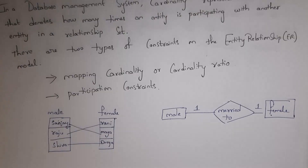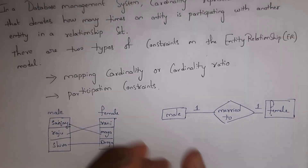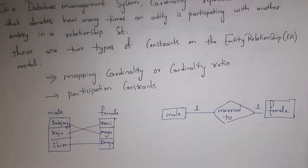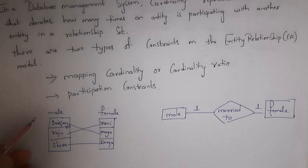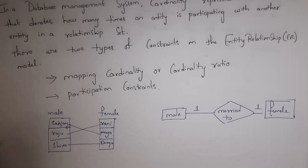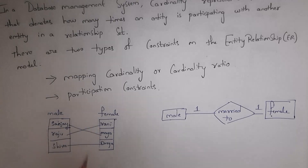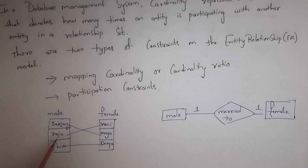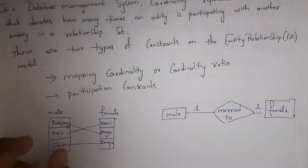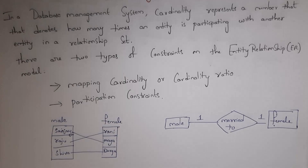For example, consider there are two entity sets — one is a male entity set and the next one is a female entity set. As we know, one male will marry one female. The male entity set contains three entities: Sanjay, Raju and Shiva. Similarly, the female entity set contains three entities: Rani, Maya and Durga. Sanjay married Maya, Raju married Rani and Shiva married Durga. Here, one male is connected with one female, so we call it a one-to-one relationship.